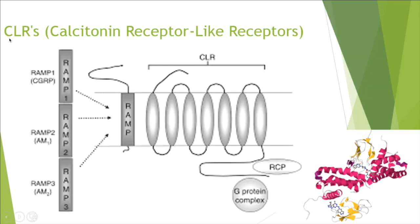One very important protein to the calcitonin gene family is the CLR, or calcitonin receptor-like receptor. Depending on what RAMP (receptor activity modifying protein) it binds to, it becomes a certain kind of receptor. If it binds to RAMP1, it becomes a CGRP receptor. If it binds to RAMP2, it becomes an adrenomedullin receptor. And if it binds to RAMP3, it becomes a dual receptor that binds both CGRP and adrenomedullin.